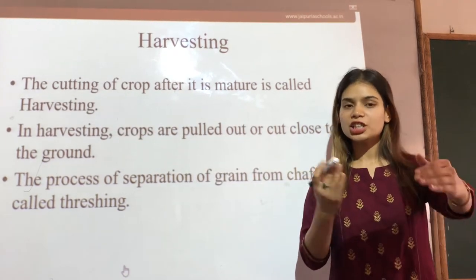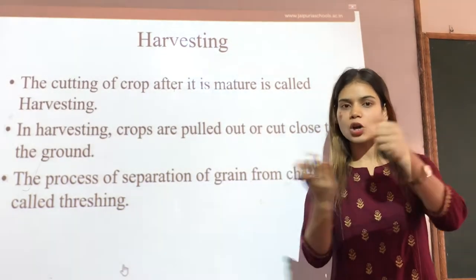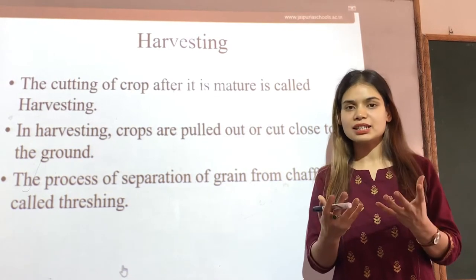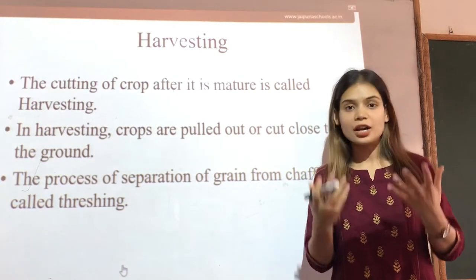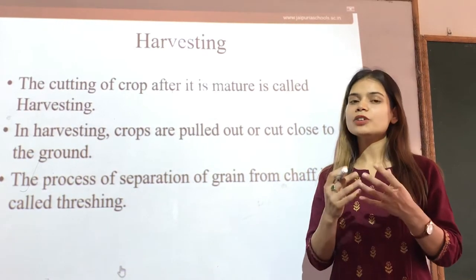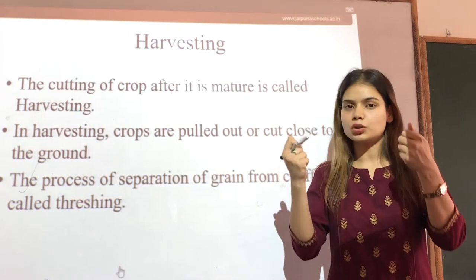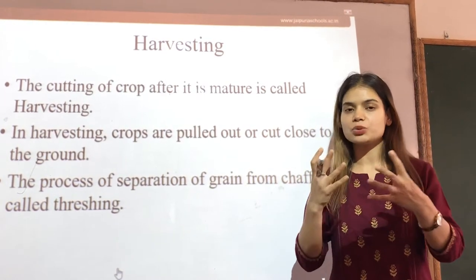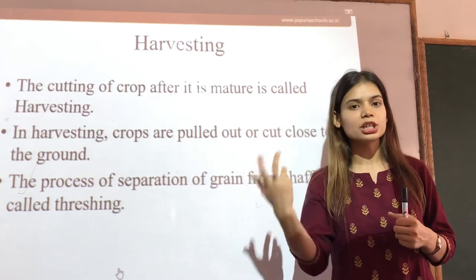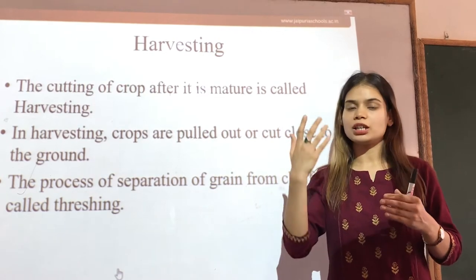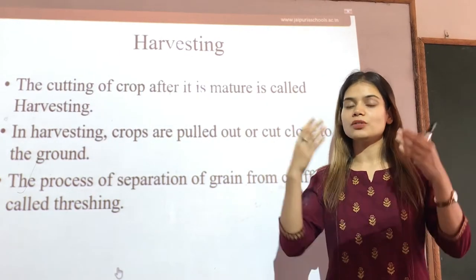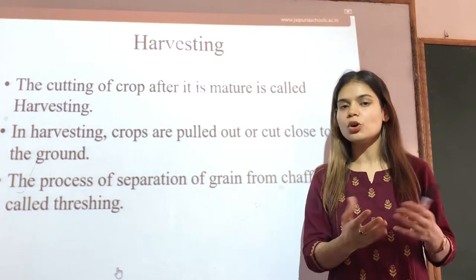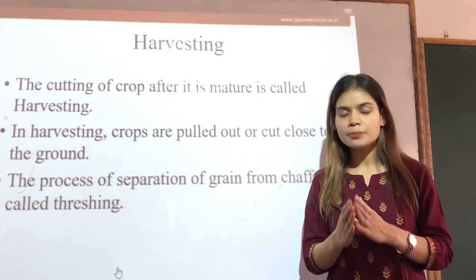In harvesting, what we do is either we cut the crops close to the ground with the help of a tool — that is a sickle — or by using harvesters. Or we can uproot the crop from the ground. So there can be two ways by which we can harvest the crop: either we uproot it, or we cut it close to the ground either with a sickle or other agricultural tool or by using harvesters.